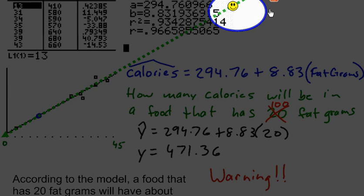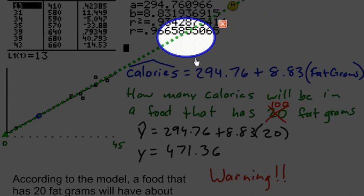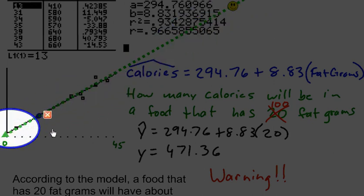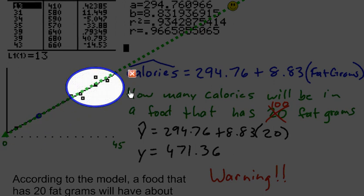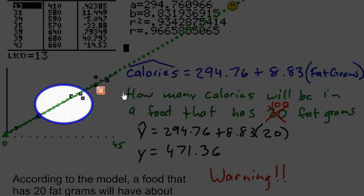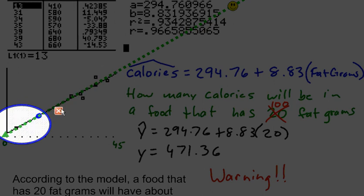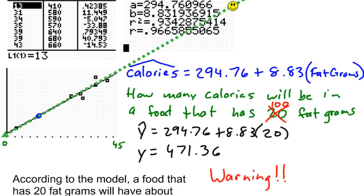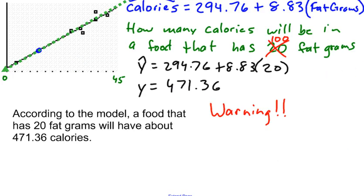So over here is 200 fat grams, and my data only goes from here, 13, up to 43. So this is a big warning. One thing in statistics that you do not want to do is you do not want to make a prediction that is outside the scope of your model.